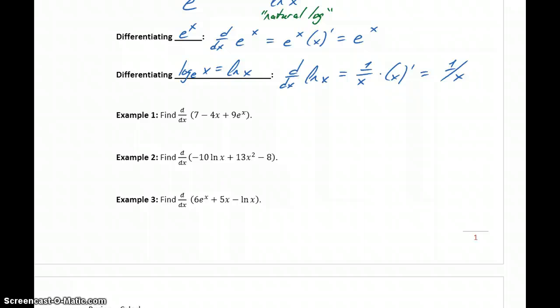All of the previous properties that we've established still apply. So in example 1, when we have the derivative of 7 minus 4x plus 9 e to the x, we can differentiate this term by term. So the derivative of 7 will become 0. The derivative of negative 4x will become minus 4. Then when we get to our new derivative property, 9 e to the x, 9 is still a constant multiple, so we can just set that aside and just focus on differentiating e to the x, where the derivative of e to the x is just e to the x, so we get negative 4 plus 9 e to the x.